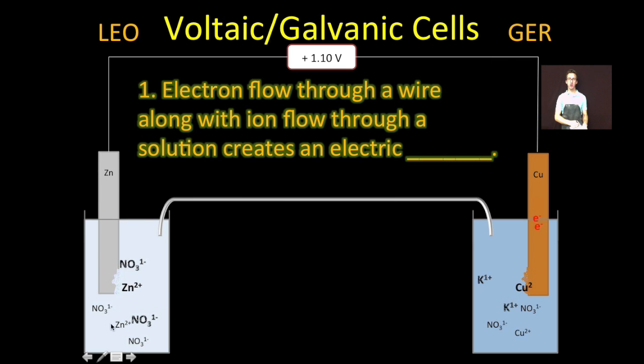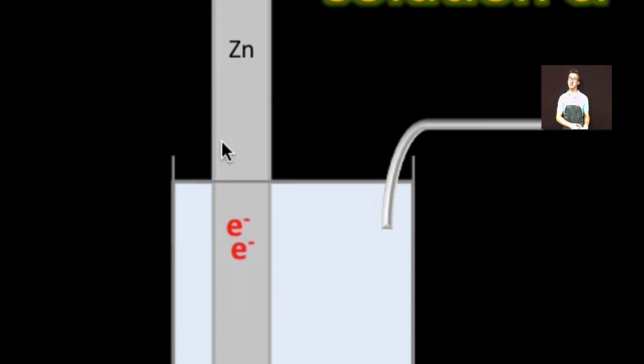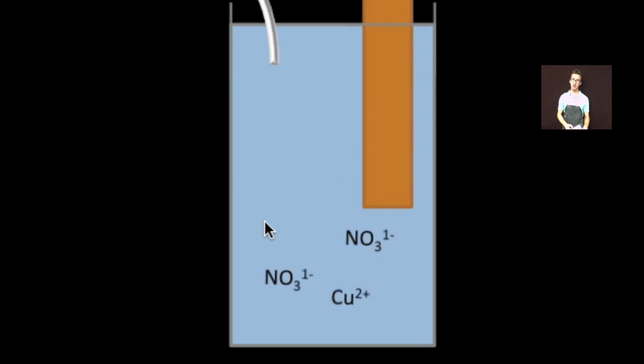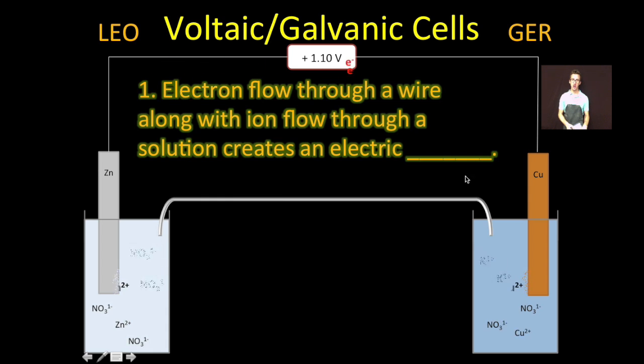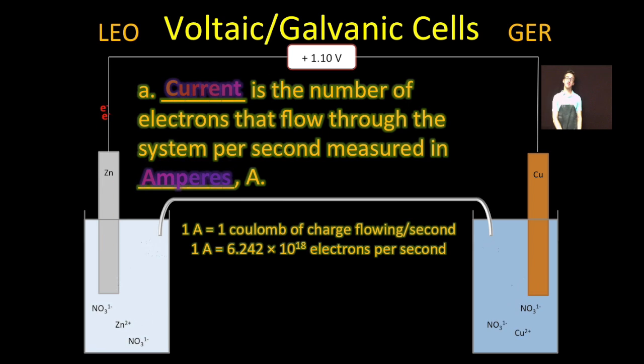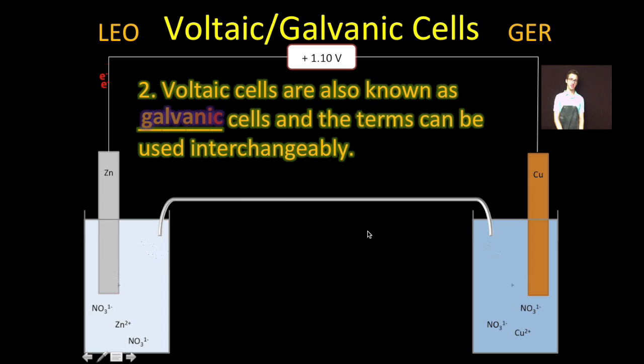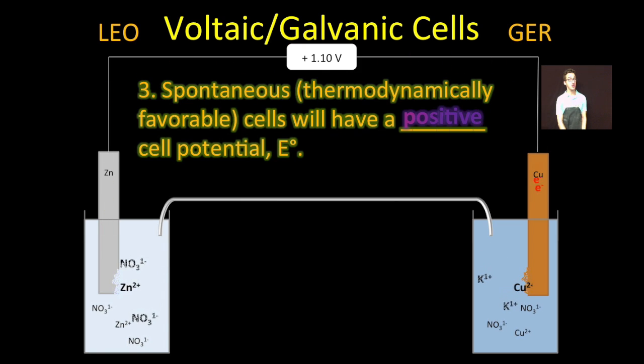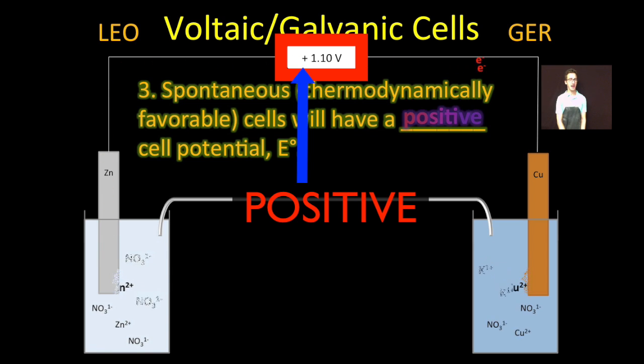So what we do is we create what are called two half cells. We separate the oxidation half reaction from the reduction half reaction. But you've still got a substance that'll readily lose electrons and a substance that'll readily pick those electrons up. And by separating those two half reactions, we're able to harness that electron flow by having those electrons flow through a wire, along with some ion flow through a solution, creates an electrical circuit, which we can use to power our lives. If you've set up your voltaic cell correctly, you should have a spontaneous or thermodynamically favored reaction with a positive cell potential.